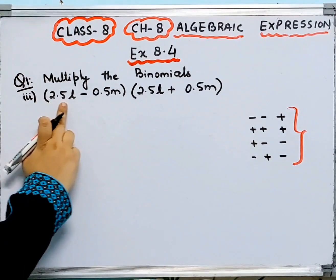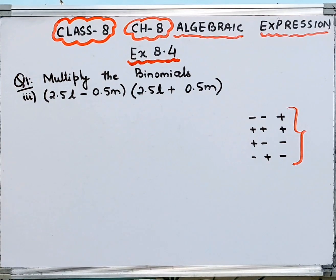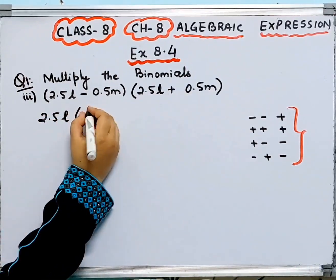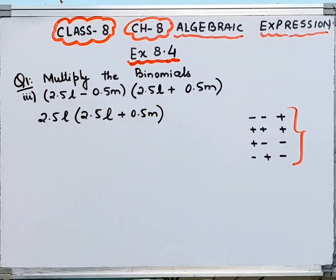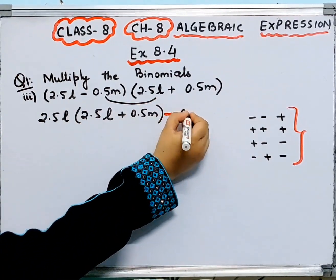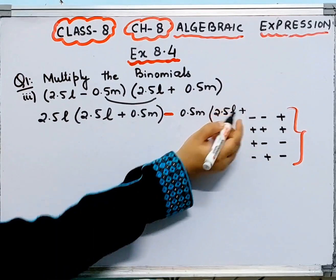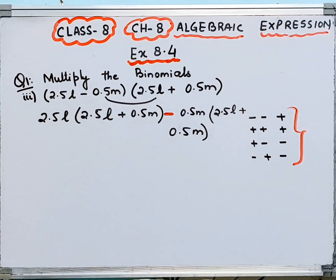Third part. You have 2.5L minus 0.5M, and you will multiply it by 2.5L plus 0.5M. So first, we will multiply 2.5L by the whole expression 2.5L plus 0.5M, and you have a minus sign so we will put minus for the second term.